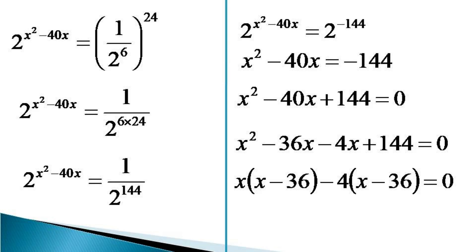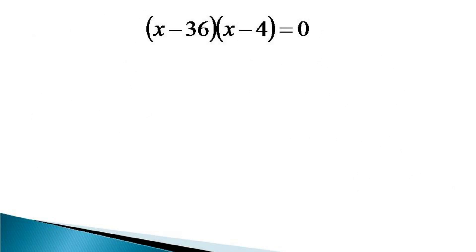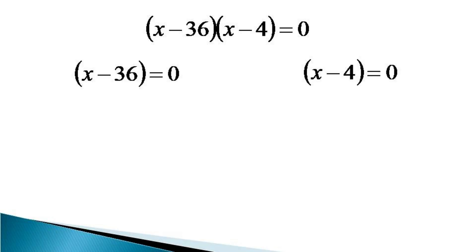Taking (x minus 36) common from the whole equation gives (x minus 36)(x minus 4) equals 0. With this, either x minus 36 equals 0, giving x equals 36, or x minus 4 equals 0, giving x equals 4.